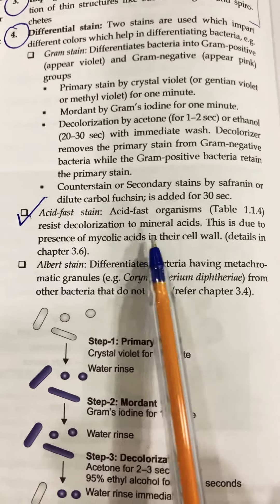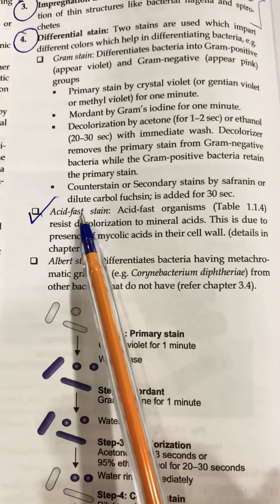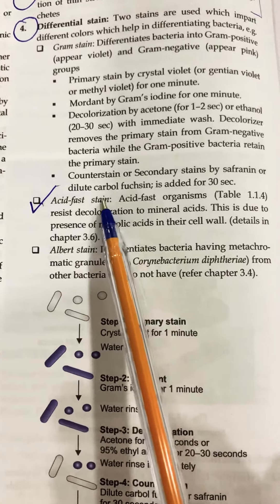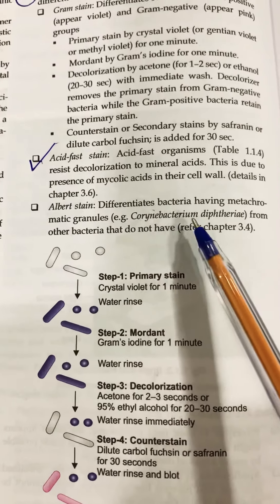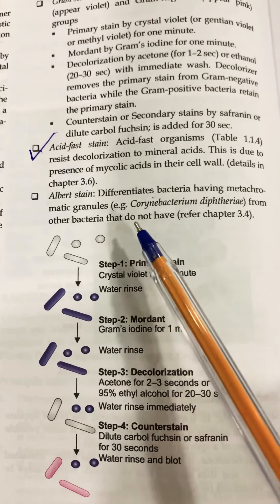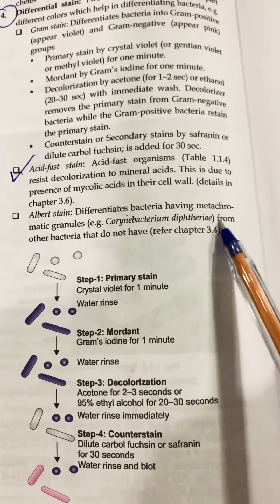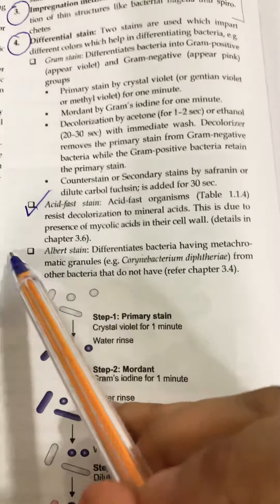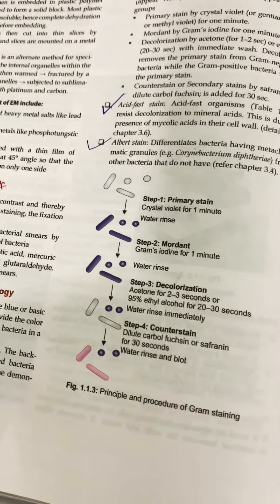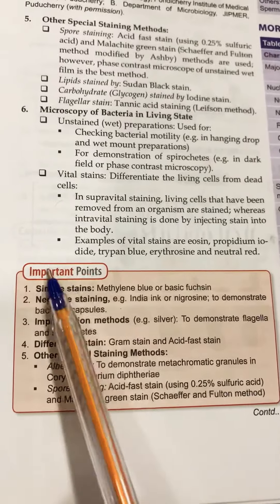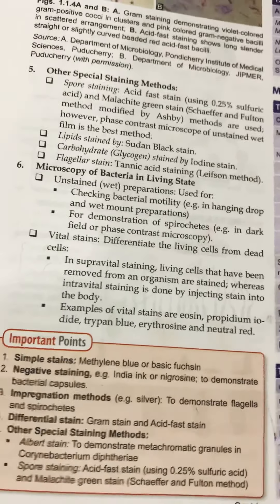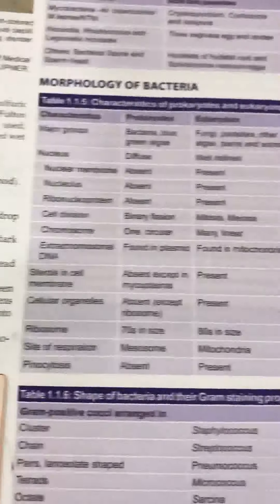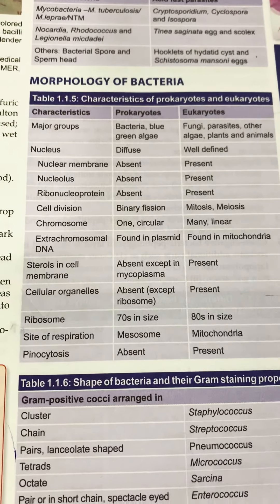You need to know the names of various acid-fast bacteria and organisms. Then comes Albert's staining — for example, for differentiating Corynebacterium diphtheriae from other bacteria. The entire staining technique topic is very important. There is also an important table regarding staining techniques — do have a look. Then the difference between prokaryotes and eukaryotes — give that an overview.